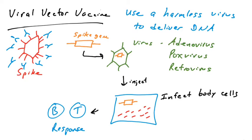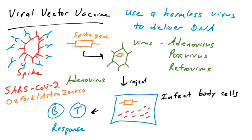There is a current viral vector vaccine being tested that has shown promise against SARS-CoV-2 — the vaccine generated by the University of Oxford in connection with AstraZeneca. They use an adenovirus carrying the spike gene. When individuals are given this vaccine, the adenovirus infects their cells but does not replicate; it delivers the spike gene into their cells, allowing the cells to make spike protein and thus mount an immune response to it.